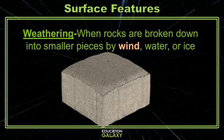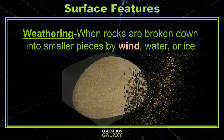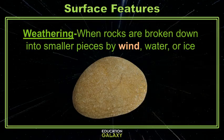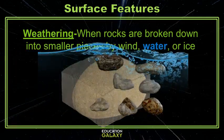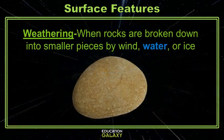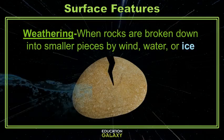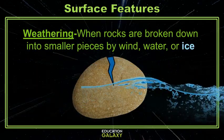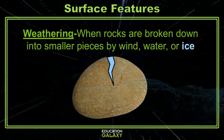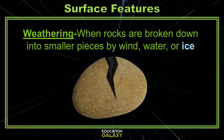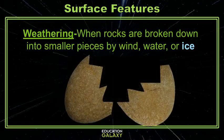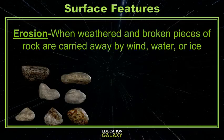Weathering is when rocks are broken down into smaller pieces. Weathering caused by wind happens when wind carries sand or small rocks and eventually breaks down and wears away the land or rocks. Water weathers rock by carrying other small rocks and pounding them against one another until one or both break. Ice weathers rock by moving into small cracks in its liquid form, then freezing and expanding to create a crack and eventually break the rock.